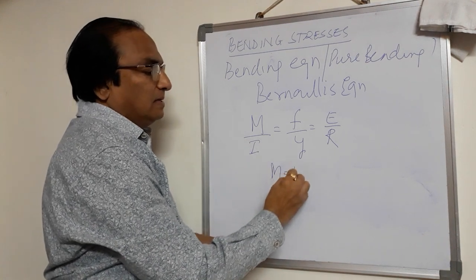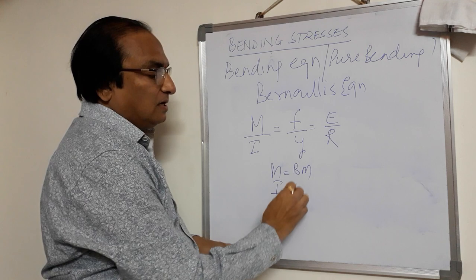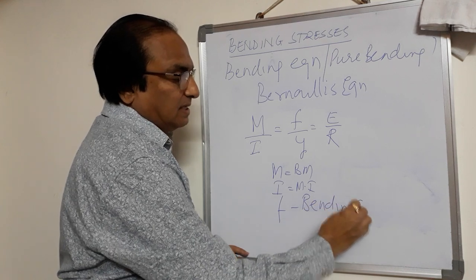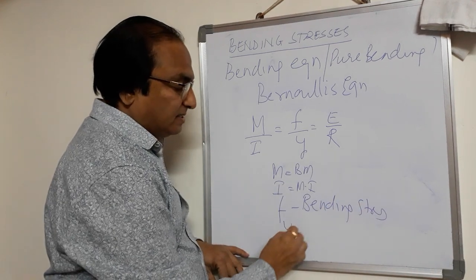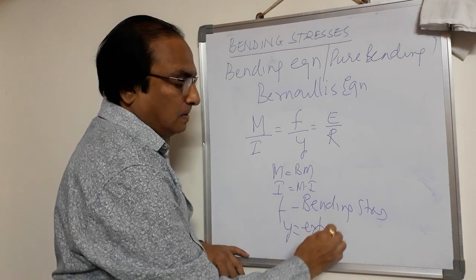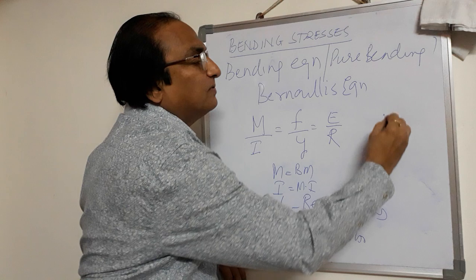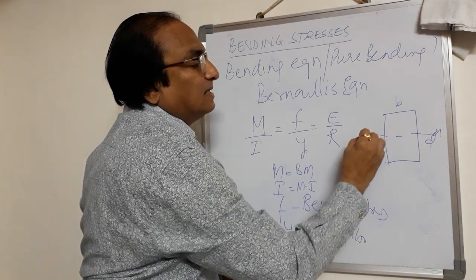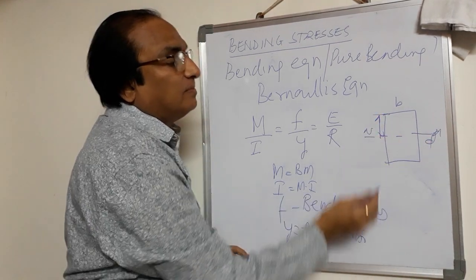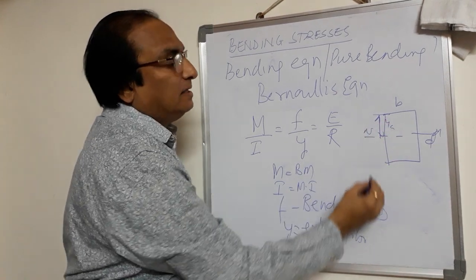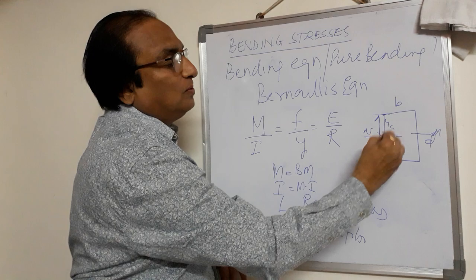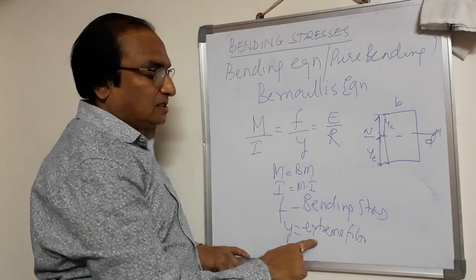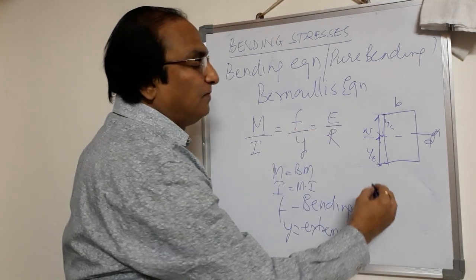Where M is the bending moment, I is the moment of inertia, F is the bending stress, and Y is the distance of the extreme fibre. For example, if this is a rectangular cross section with width B and depth D, and this is the neutral axis at the centre, then Yc is the distance of the extreme fibre in compression from the neutral axis, and Yt is the distance in tension. E is Young's modulus.